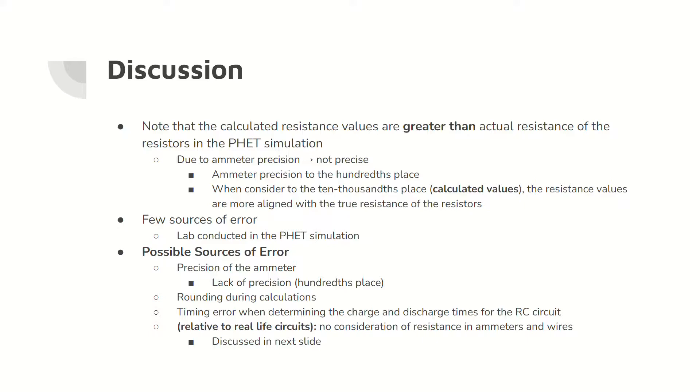Note that in part five, the calculated resistance values are greater than the actual resistance values due to a lack of precision in the ammeter in the PhET simulation. In addition to a lack of precision, other sources of error include rounding errors during calculations.